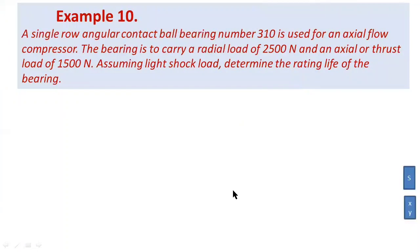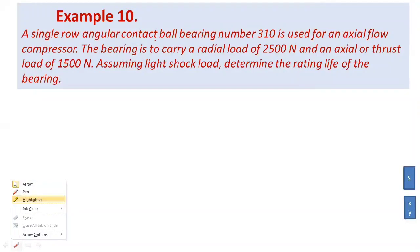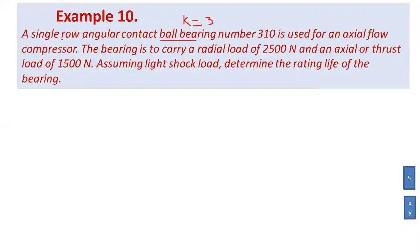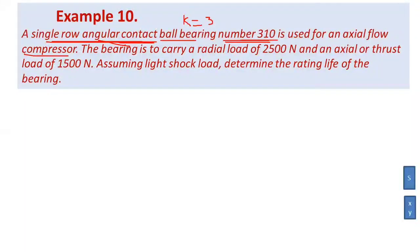For the third and last problem: a single row angular contact ball bearing, so k equals 3. The bearing number given is 310, used for an axial flow compressor. The bearing carries a radial load WR and an axial or thrust load WA.